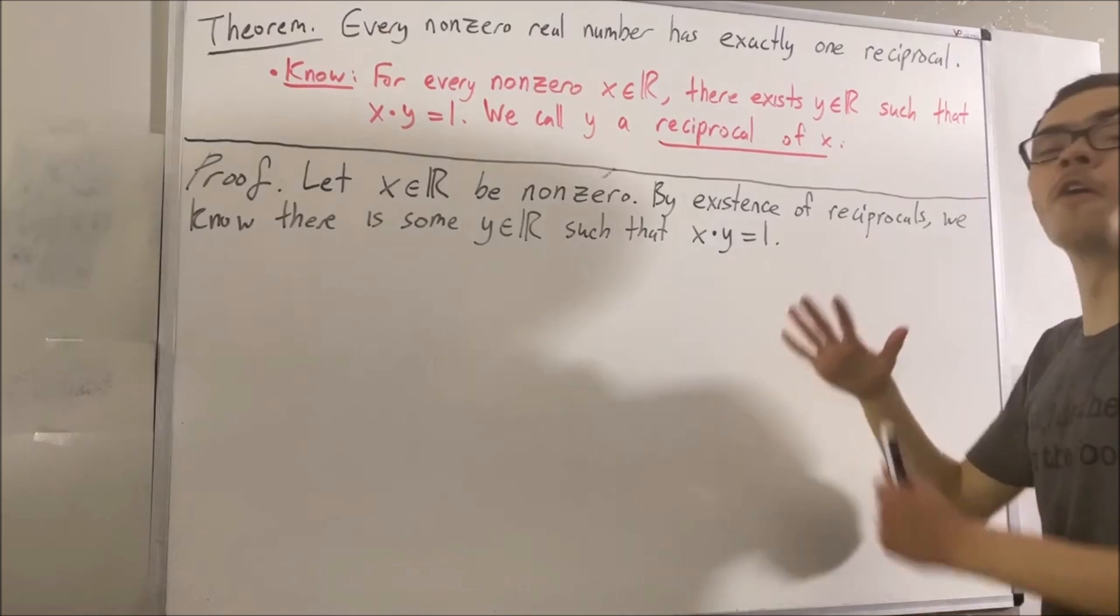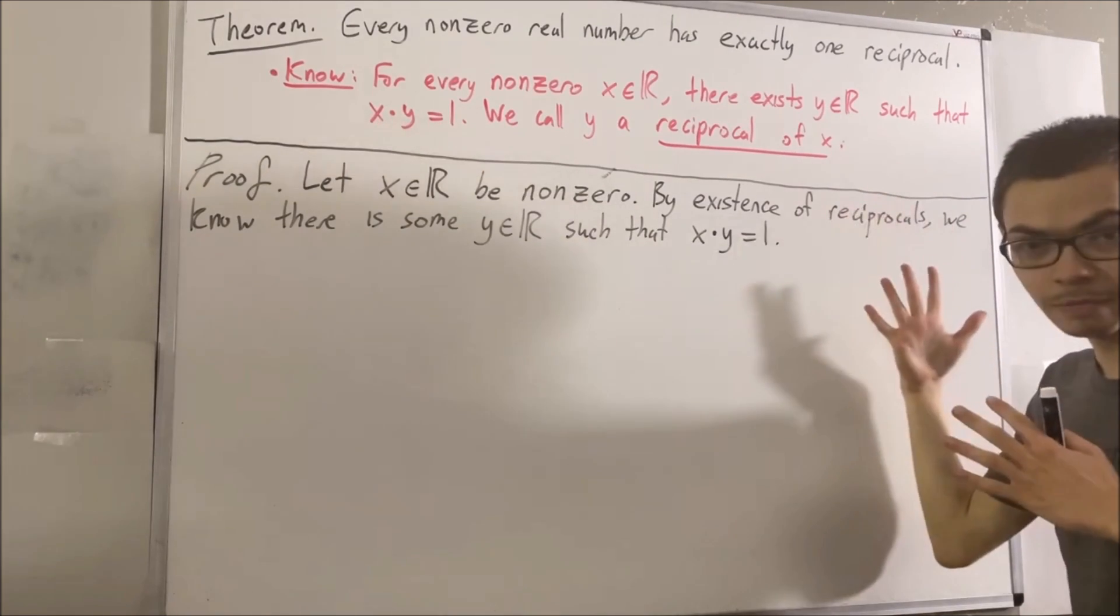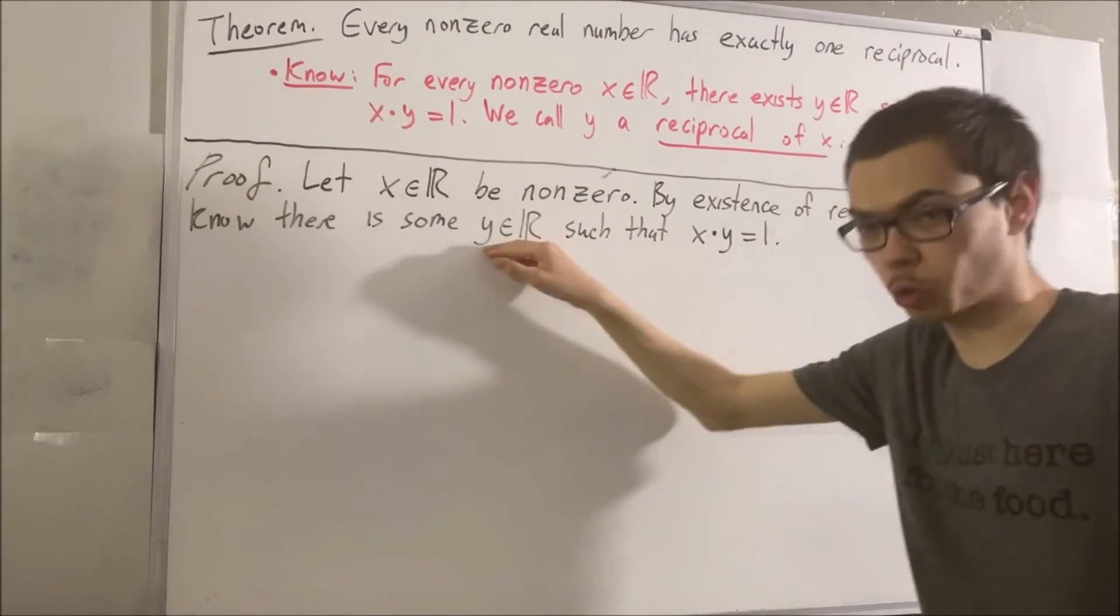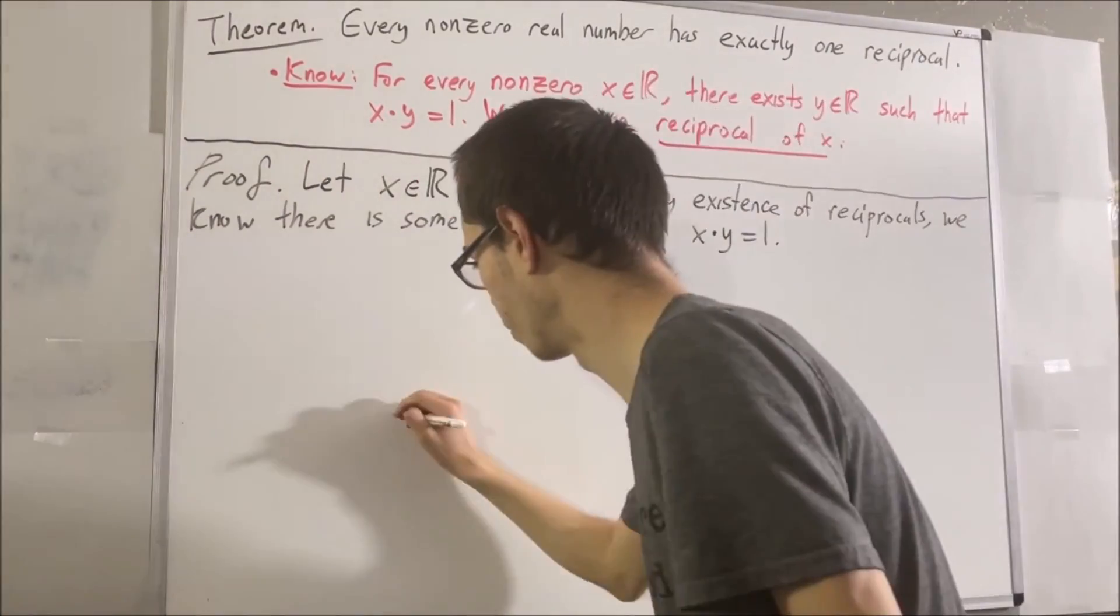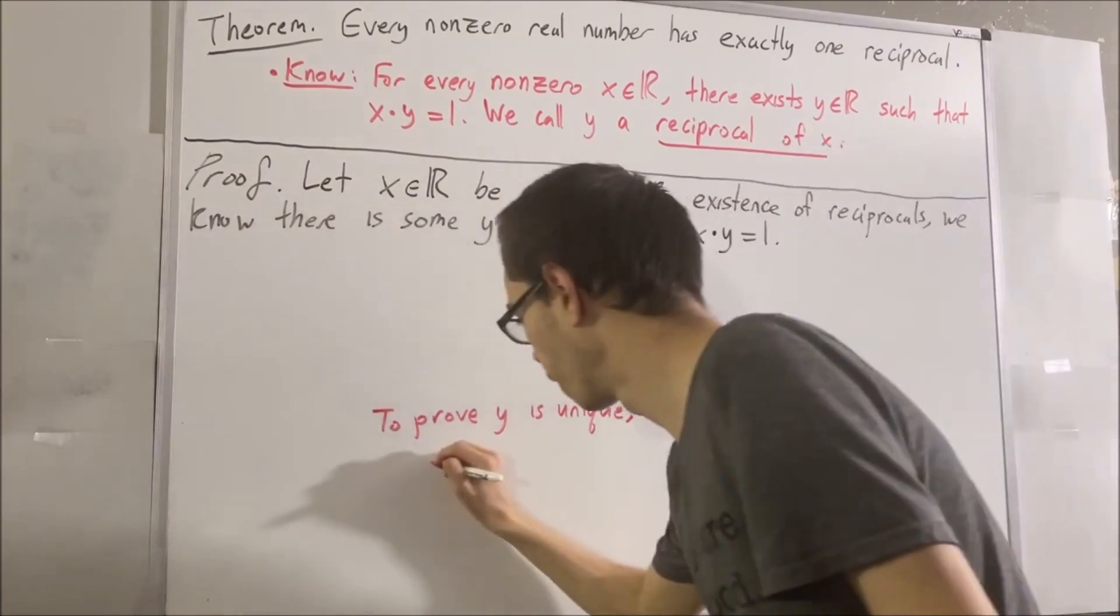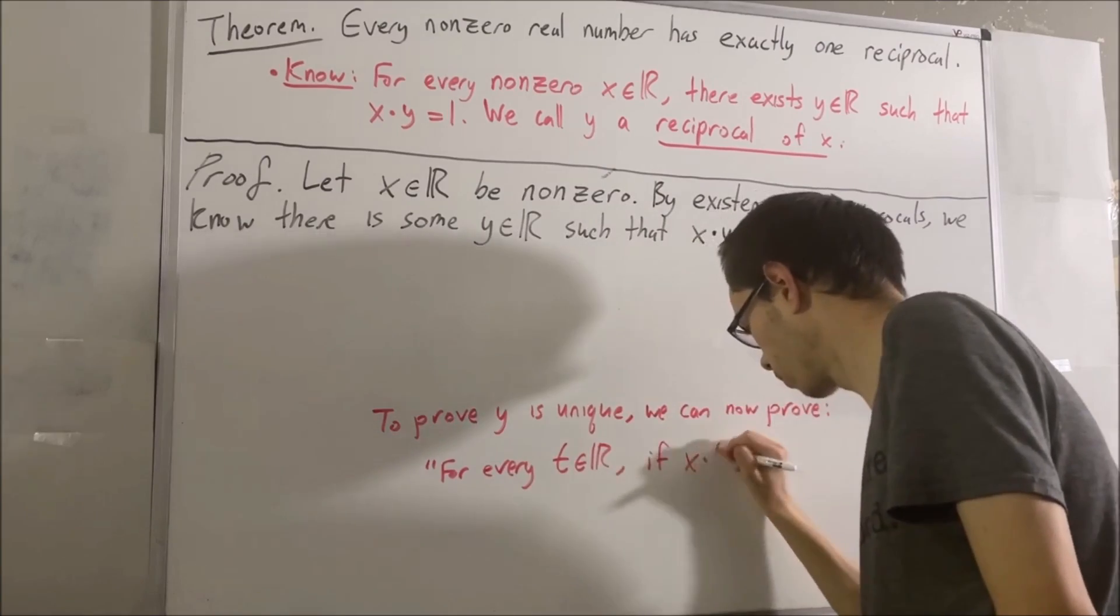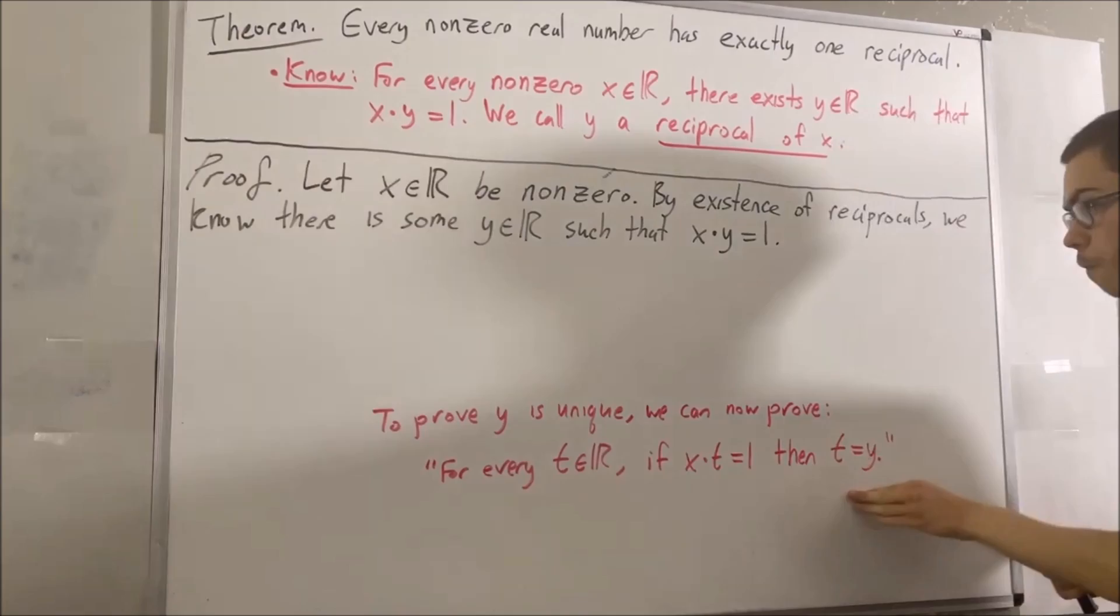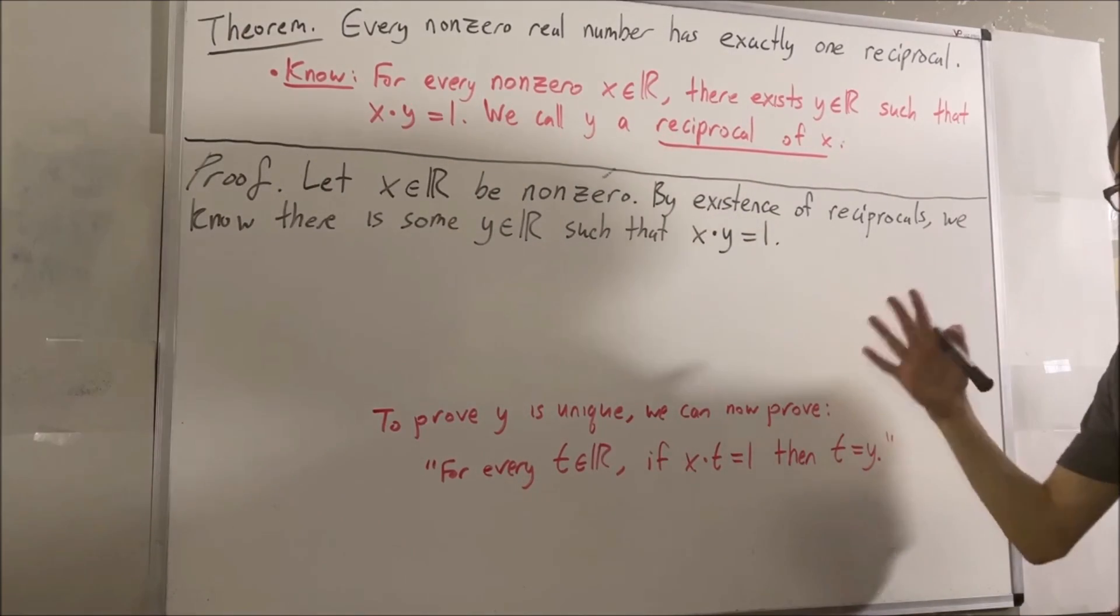In other words, we can prove for every real number t, if x times t is equal to 1, then t must be equal to y. So this is what we can prove to show that y is the only reciprocal of x.